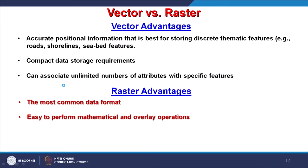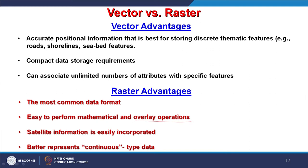Since raster is based on a two-dimensional matrix concept, mathematical and overlay operations are very easy compared to vector data. Raster does not have the limitations that vector faces in overlay operations. Additionally, satellite imagery is easily incorporated into raster workflows because both are raster — fully compatible. If using vector data alongside satellite images, compatibility issues may arise. For any continuous phenomenon, raster is preferred over vector.